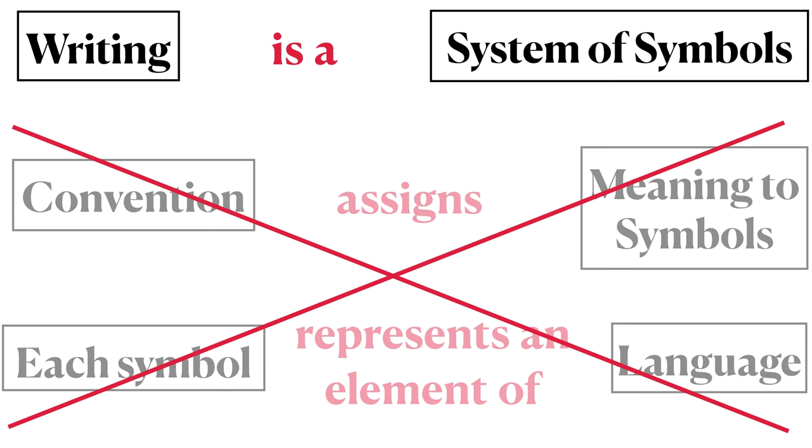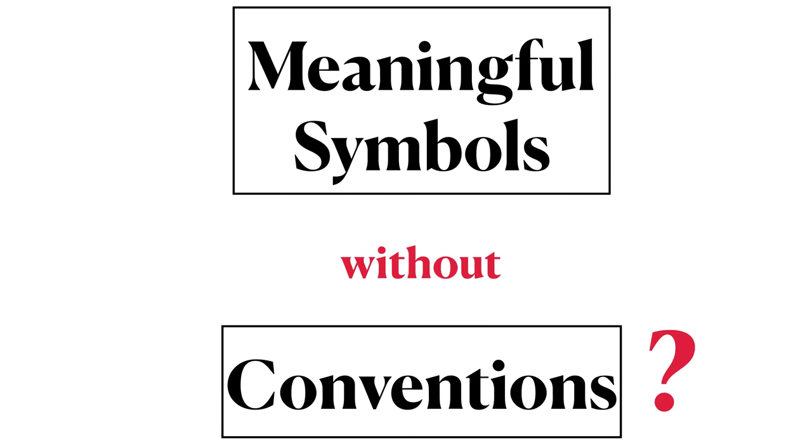We now ask, to what extent is it possible to skip these last two steps? Can we have a system of symbols that conveys meaning without convention? Can we have meaningful symbols without pre-established human conventions?